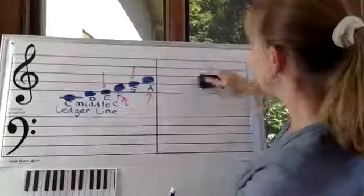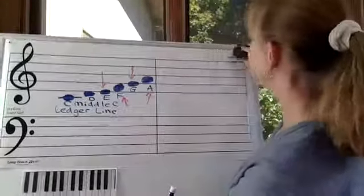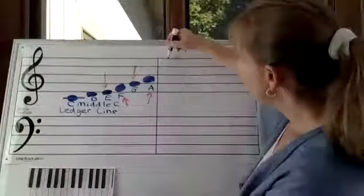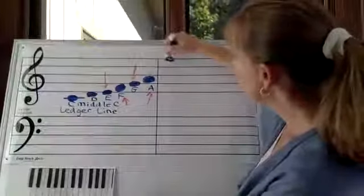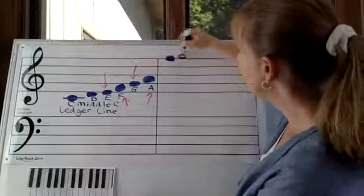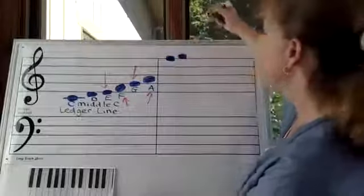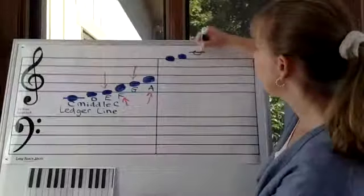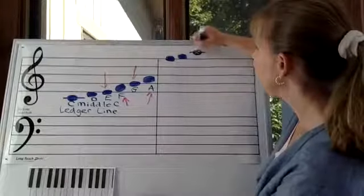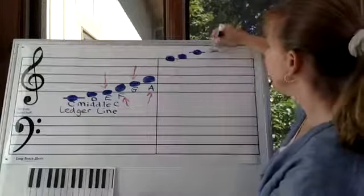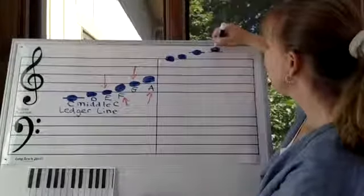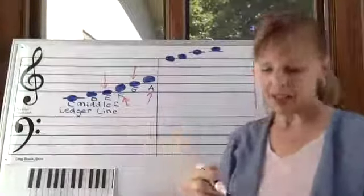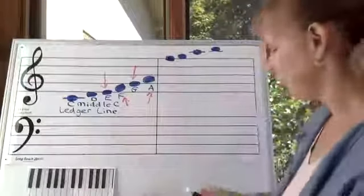Next, I'm going to show you what the ledger lines are like. So we have the note up here, which is F. And then you can keep going up—G. And then you have to draw a line, and then that would be A. And you draw the line again, and that would be B. You see how that works? It just all keeps going up, just in order.